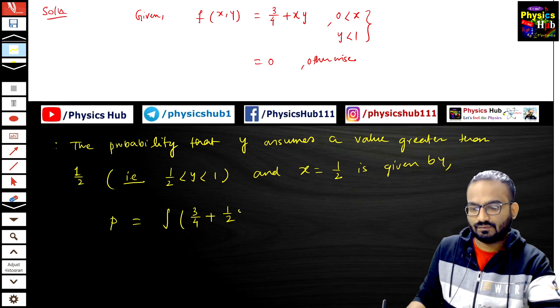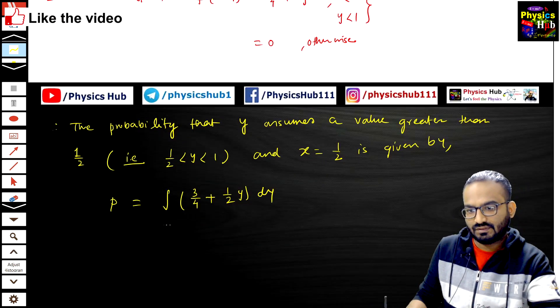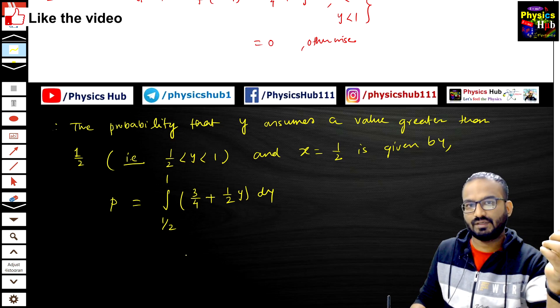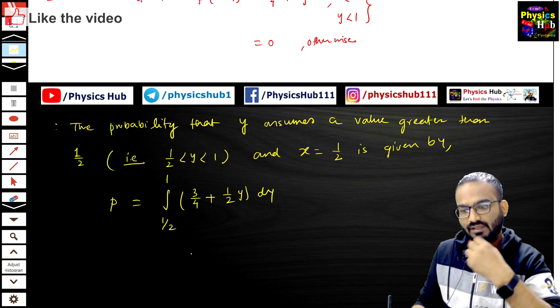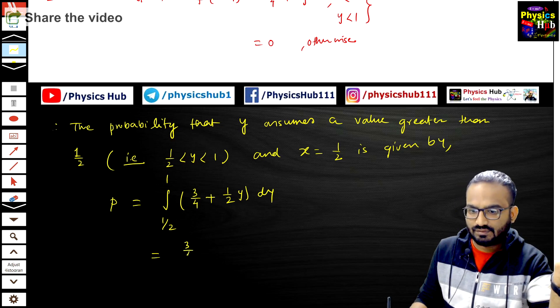runs from 1/2 to 1. If you integrate the probability density over dy, you will get the probability: this gives you 3/4